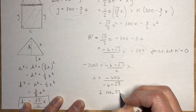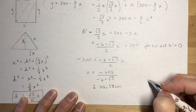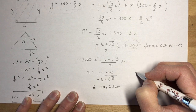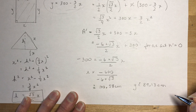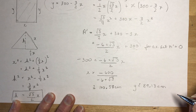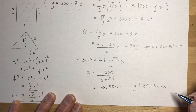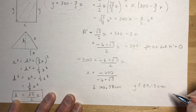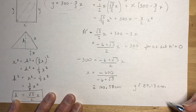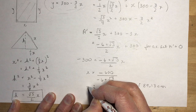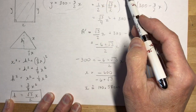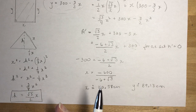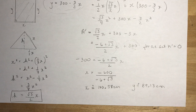With x ≈ 140.58 cm, substitute back to find y using y = 300 − (3/2)x, giving y ≈ 89.13 centimeters. The question asks to maximize the area for the most light — so the optimal dimensions are x ≈ 140.58 cm and y ≈ 89.13 cm. You can then substitute back to calculate the total area. There are three more optimization word problems in the next lesson — hope this helps, see you soon!